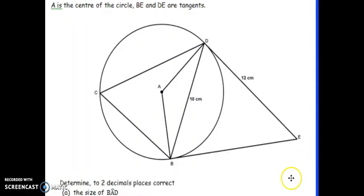The question states, A is the center of the circle and BE and DE are tangents. First thing that I know, tangents from a common point to the same circle are equal in length. So I indicate that for myself because I will have to use that as the time progresses.